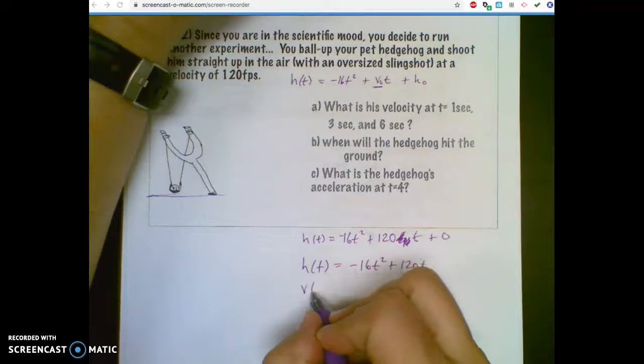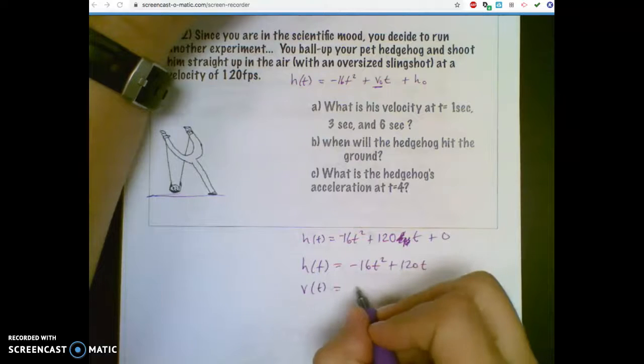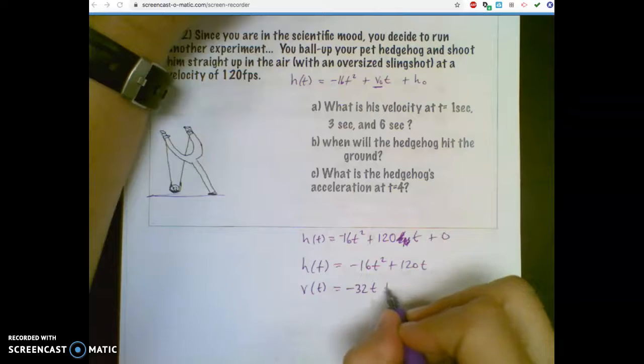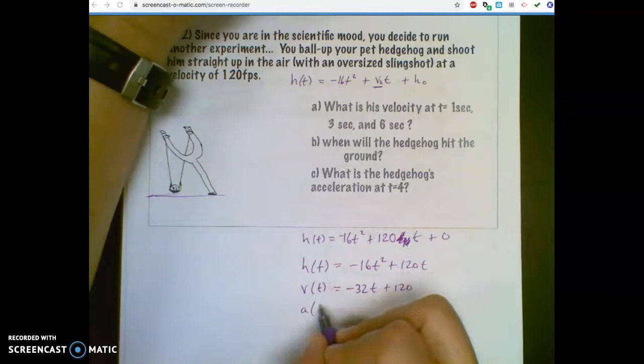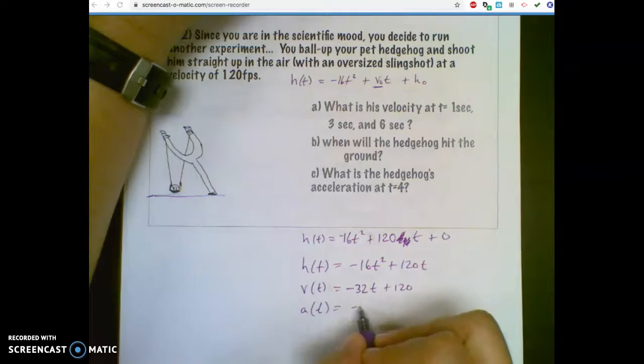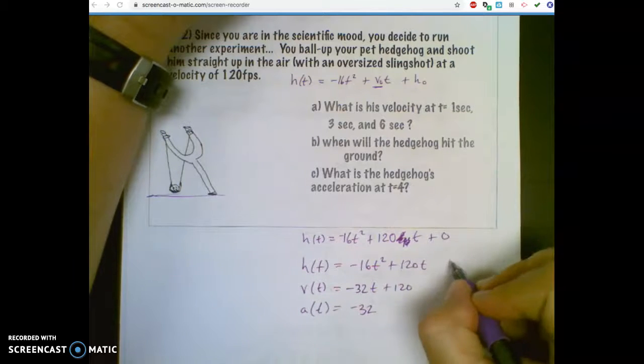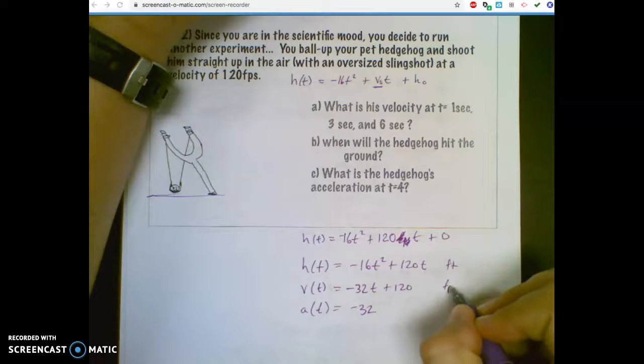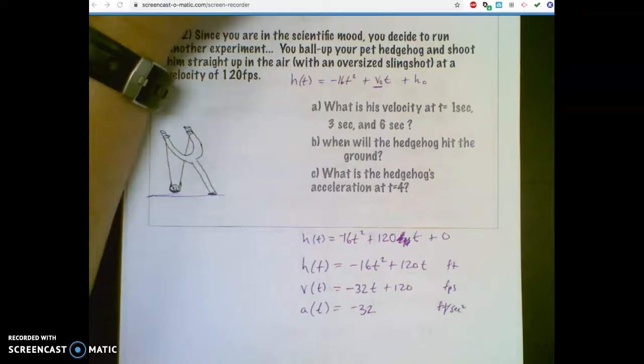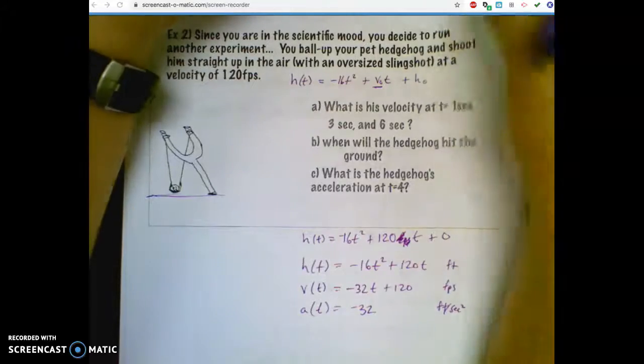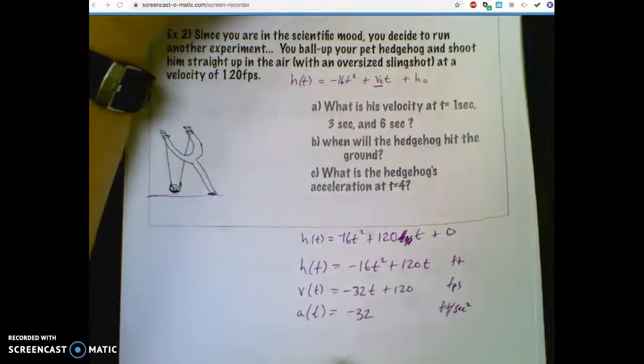Now, while I'm at it, I might as well find my equation for velocity of this hedgehog, right? Using our power rule, you multiply that in front, plus 120. And while I'm at it, acceleration, which is negative 32. And then the units on these are feet, feet per second, and feet per second squared. So those are the three units. I don't think we've asked about acceleration yet, but we could.